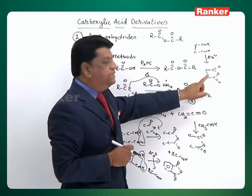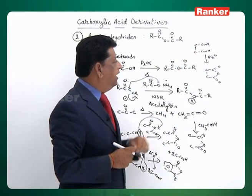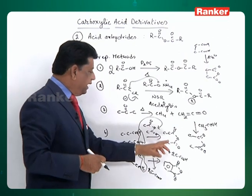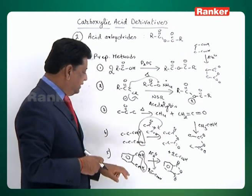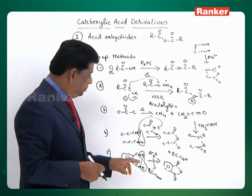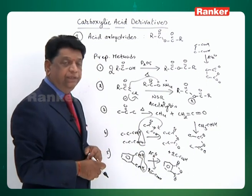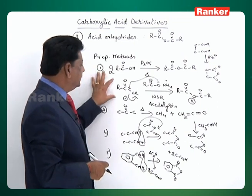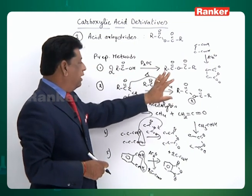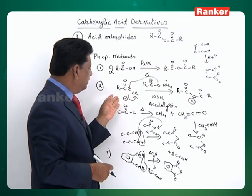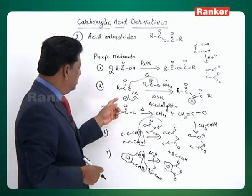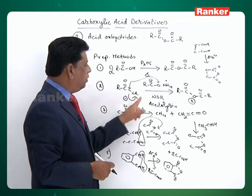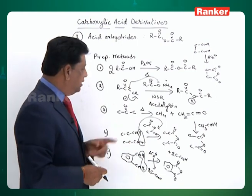Succinic acid gives succinic anhydride by heating with acetic anhydride, which takes away water and gives succinic anhydride. So higher anhydrides can be prepared from lower anhydrides, and cyclic anhydrides can be prepared from open-chain carboxylic acids. The best method, however, is acid chlorides reacting with sodium or potassium salts of carboxylic acid — acid chlorides undergoing acidolysis to give the anhydride is the best method.